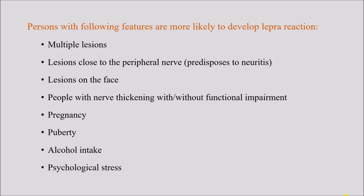People with certain features are more likely to develop lepra reaction. Risk factors include multiple lesions, lesions on the face, nerve thickening with or without functional impairment, pregnancy, puberty — both periods of hormonal change — as well as alcohol intake and psychological stress. All these situations put a person at risk of developing lepra reaction.